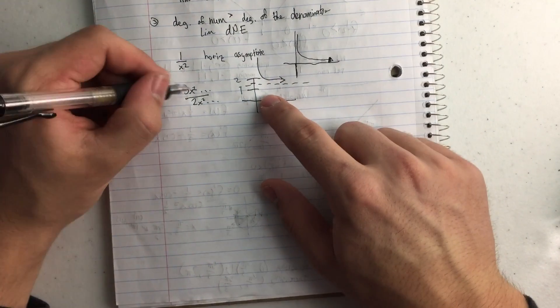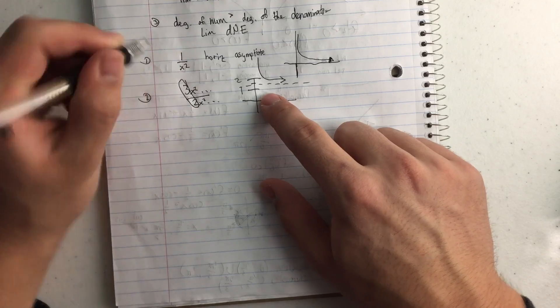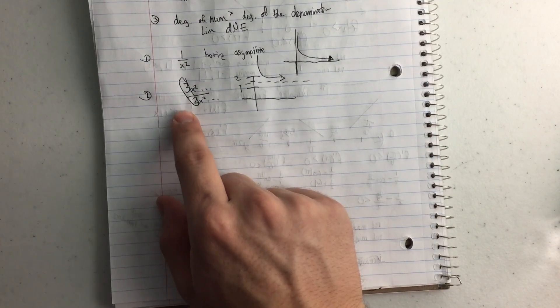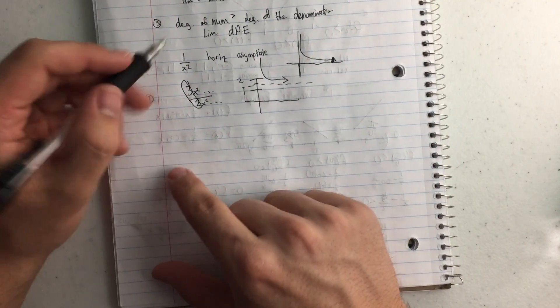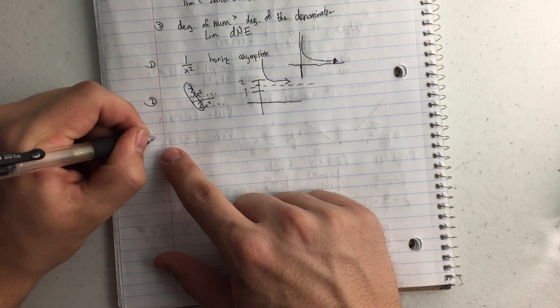And so the horizontal asymptote is just at the ratio, basically the fraction. You're going to take the two leading coefficients, and that fraction is going to be where your horizontal asymptote is.